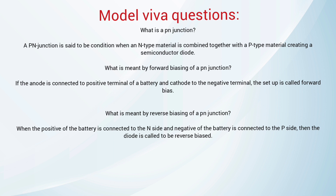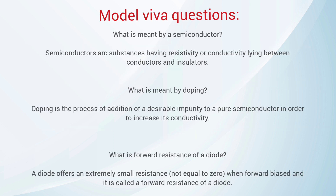What is meant by reverse biasing of a P-N junction? When the positive of the battery is connected to the N-side and the negative of the battery is connected to the P-side, the diode is said to be in reverse bias. What is a semiconductor? Semiconductors are substances having resistivity or conductivity lying between conductors and insulators. What is meant by doping? Doping is the process of adding a desirable impurity to a pure semiconductor in order to increase its conductivity.